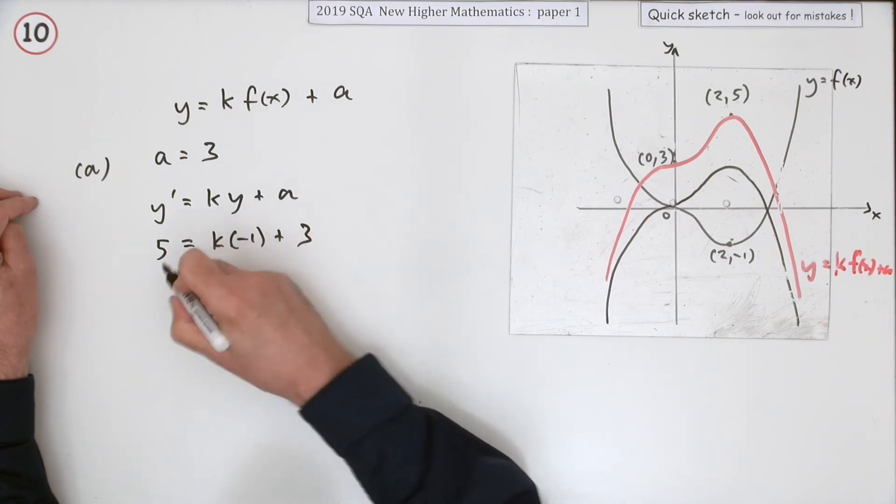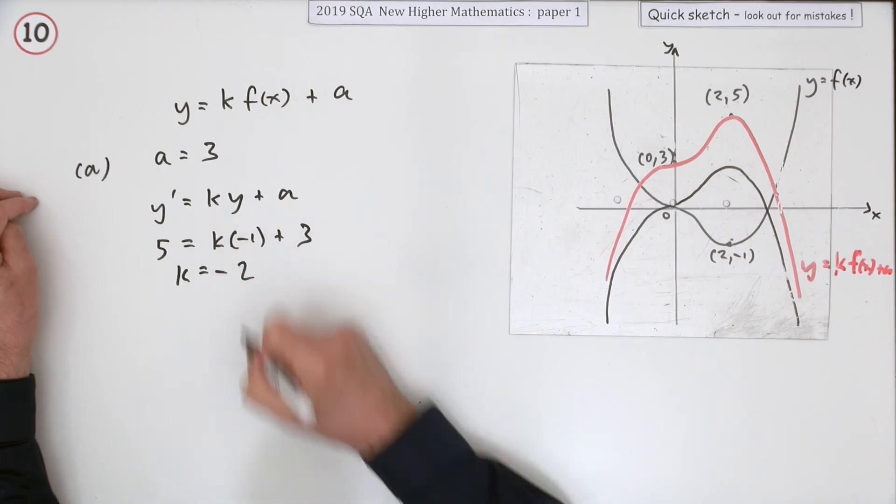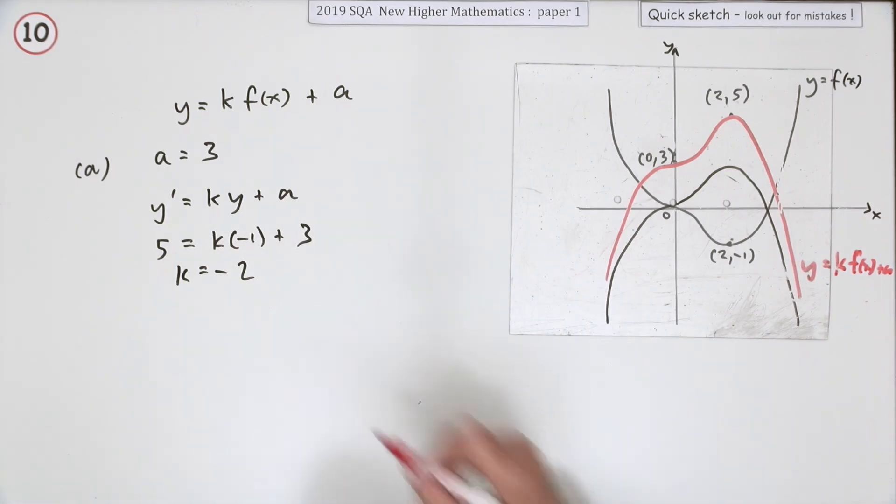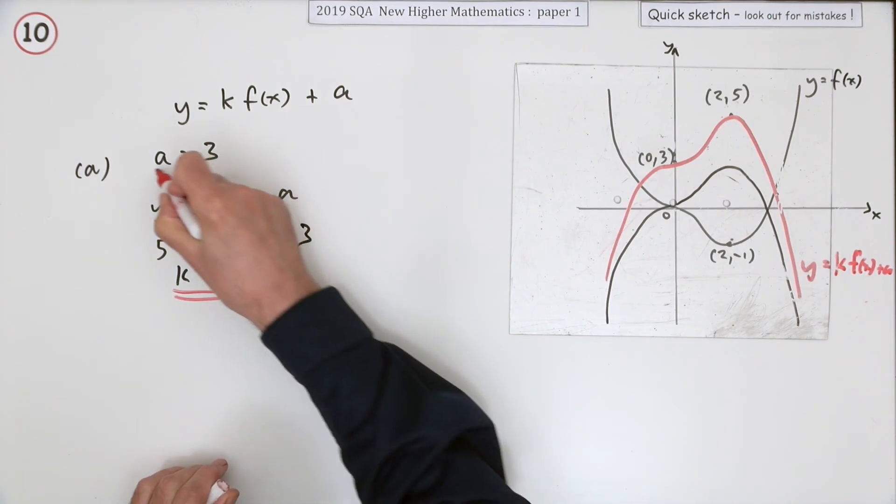So negative k, put it over to that side. Bring the five over. k is negative two. What sort of footery wee one was that?